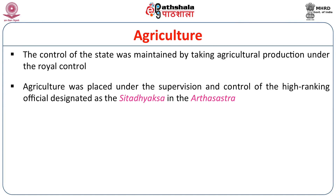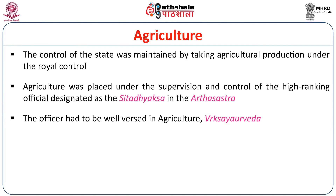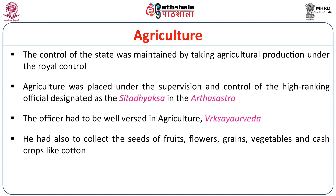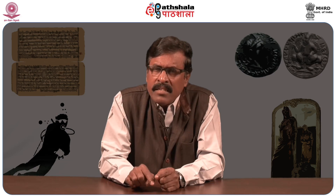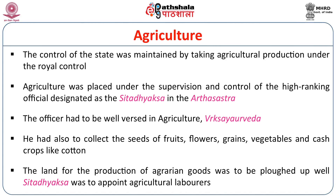The first control of the state was maintained by taking agricultural production under royal control. Agriculture was placed under the supervision and control of the high-ranking official Agronomoi, or Sitadhyaksha, according to Megasthenes. The Sitadhyaksha in the Arthashastra is mentioned as the supervisor of agricultural activities. The officer had to be well versed in agriculture. He had also to collect the seeds of all fruits, flowers, grains, and vegetables, and to be aware of Vriksha Vaidya — that is, knowledge of plants — for the health of trees and plants.